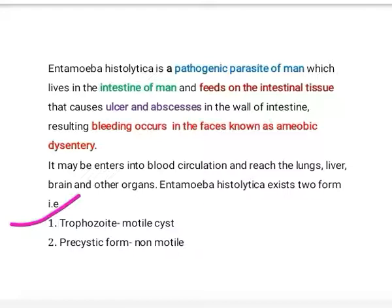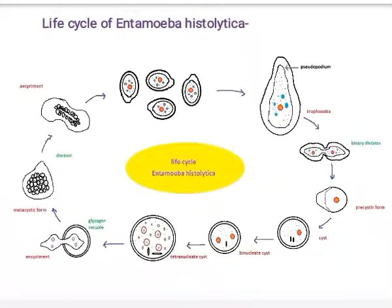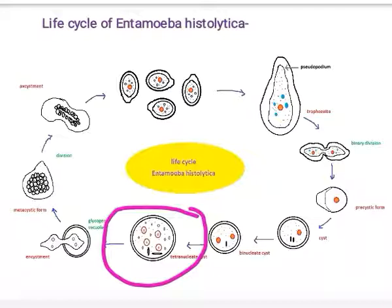Entamoeba histolytica exists in two forms: first, the trophozoite form, which is the motile form of the parasite; and second, the precystic form, which is the non-motile form. The life cycle of Entamoeba histolytica is completed on only one host — man. Infection occurs via ingestion of contaminated food and water containing the mature cyst of the parasite, which is the quadranucleated or tetranucleated cyst — the mature cyst form, resistant to gastric juice of the stomach.